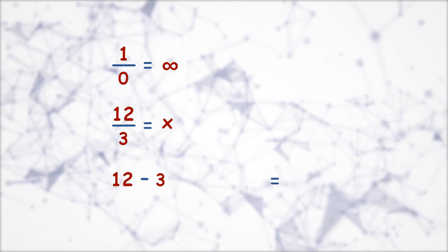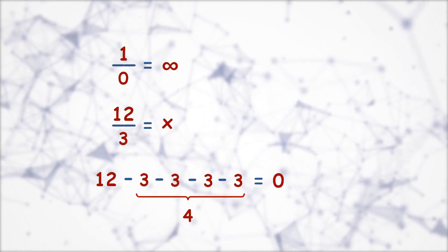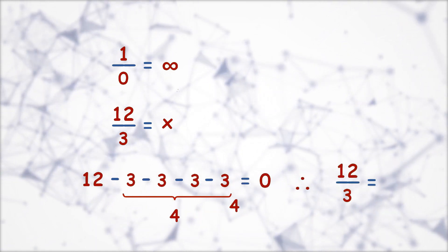So first let us refresh the logic of reverse subtraction. If we have 12 divided by 3, then how many times we have to subtract 3 from 12 such that we are left with 0. So we have subtracted 4 times which is the solution of 12 by 3.